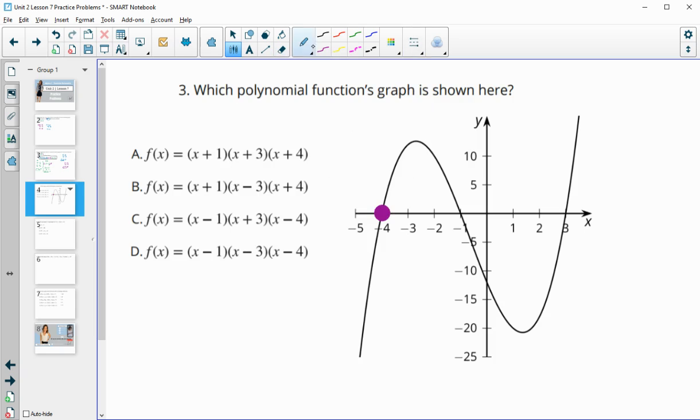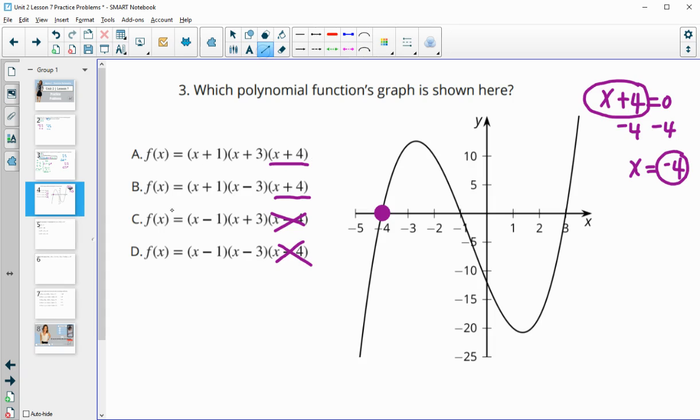We're looking for factors that would equal out to negative 4. Let's try this first one when we set them equal to 0. We have x plus 4 equals 0. If I subtract 4 from both sides, I get a zero of negative 4. So this factor is going to produce a zero of negative 4. So this one could be good, this one could be good, this would be bad. x minus 4 would produce a zero at positive 4. So we're done with option C and option D.